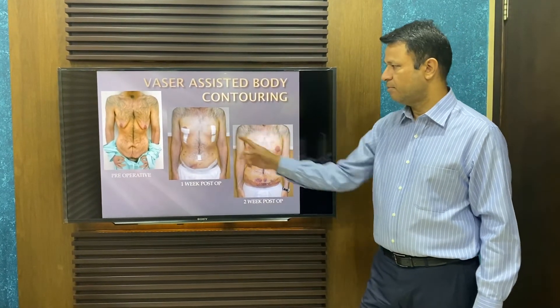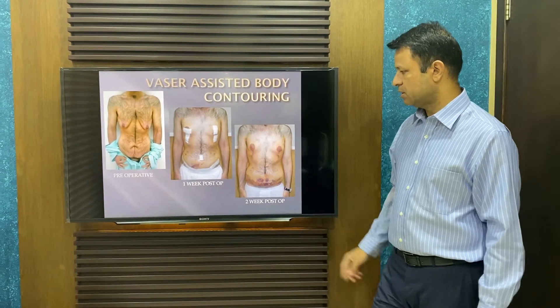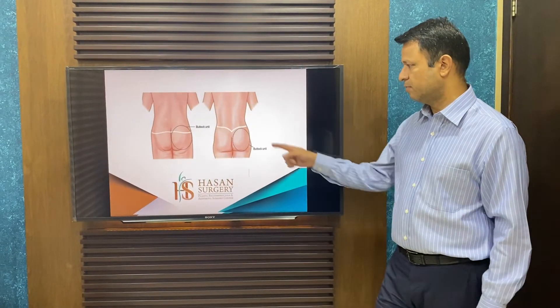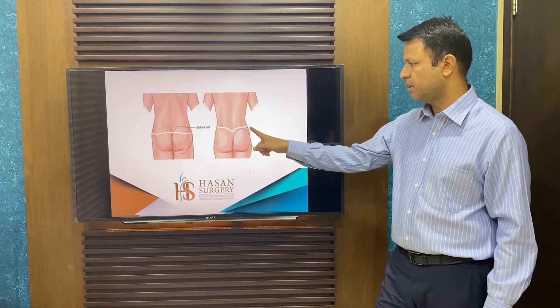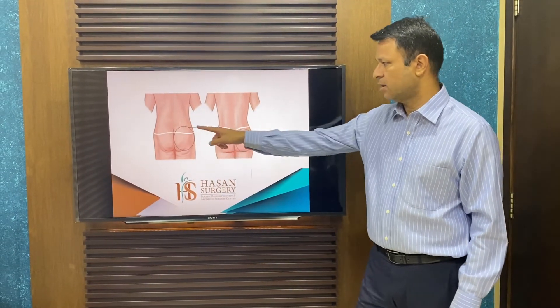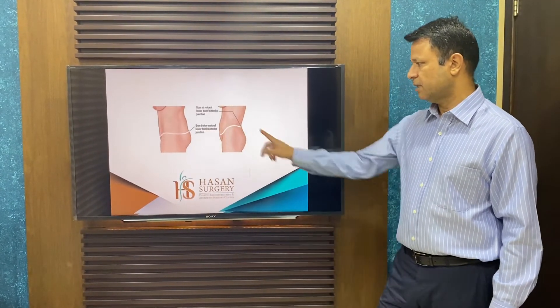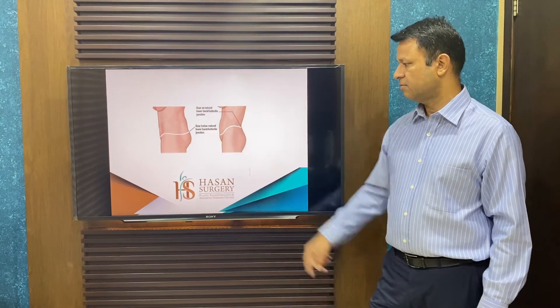This patient had the whole trunk done — you can see the chest and abdomen being addressed in the before and after. This is a buttock lift patient; this is the scar that is formed in the buttock lift, and this is the side scar of the buttock lift.